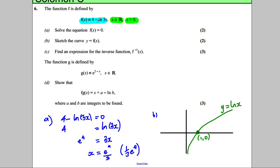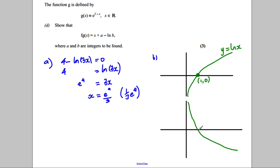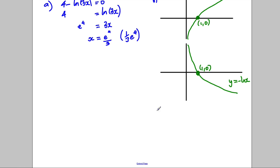Let's do the transformation. First, let's think about the fact that it's a negative natural logarithm of 3x. So the first stage is to draw the negative logarithm graph. That looks like this — it still crosses at (1, 0), and this is y equals negative logarithm of x. Everything above the axis is now below, and everything below is now above the axis.